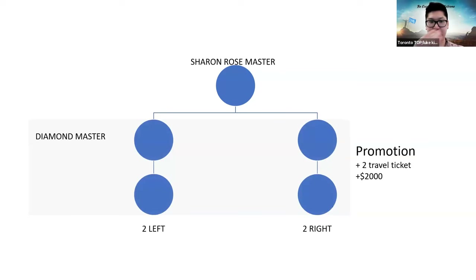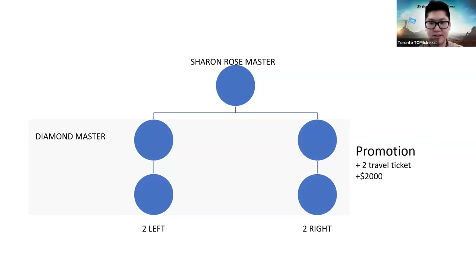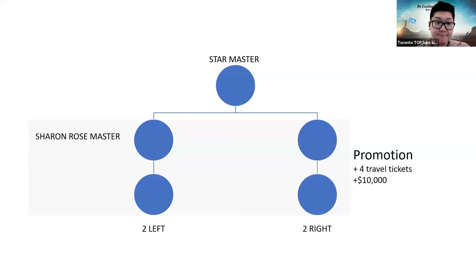From Diamond Master, the same pattern repeats — duplicate yourself by creating two Diamond Masters on your left and right, and you become Sharon Rose Master. Promotional gift: two travel tickets and $2,000. The pattern continues from there. I'll now just mention each mastership and its promotional gifts. At Star Mastership: four travel tickets and $10,000 — all-paid promotional trip provided by the company. At Royal Master: another four tickets, a car rental fee, $2,000 per month for sponsorship activities, and $50,000 cash value.